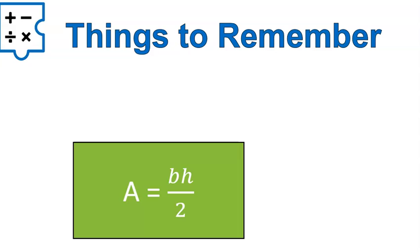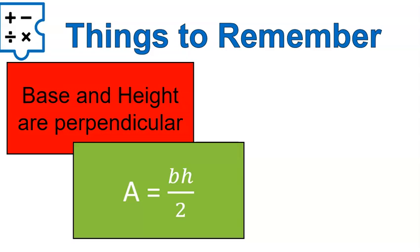A couple of things to remember. Our equation or formula for the area of a triangle is area is the base times the height divided by two. The base and height are perpendicular. So that's something that you need to keep in mind. I hope that video was helpful for you. Make sure to use the worksheet to practice before you take the quiz. Good luck and have a wonderful day.